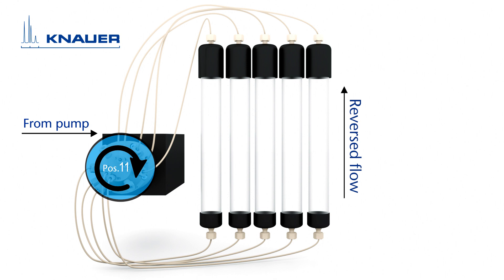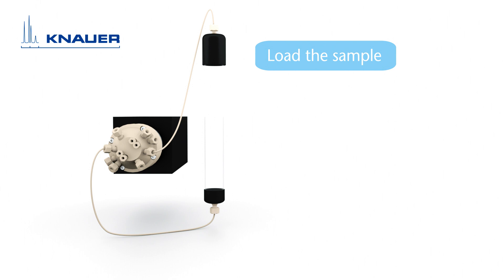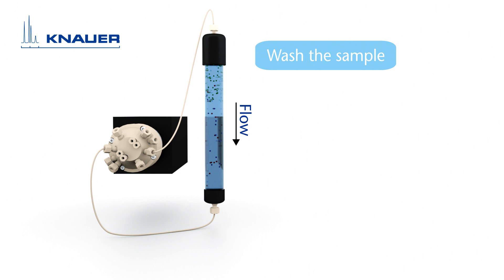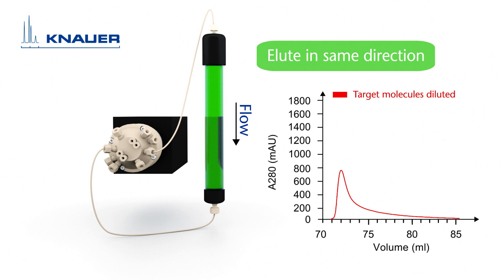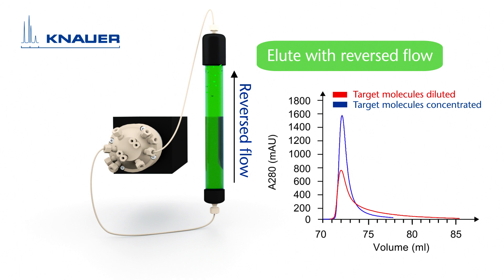In affinity chromatography, your target molecules will accumulate at the top of the column. Elution in the same direction dilutes your target molecule along the column. By elution with reversed flow, you increase the concentration while decreasing the sample volume.